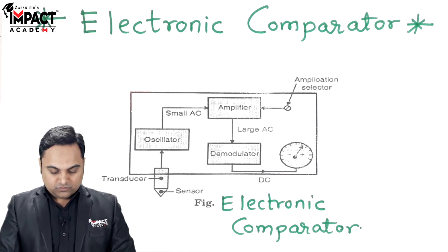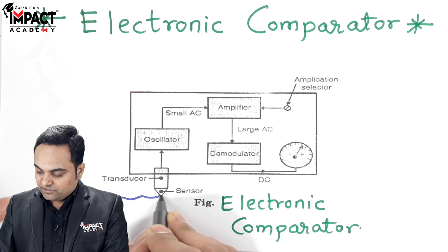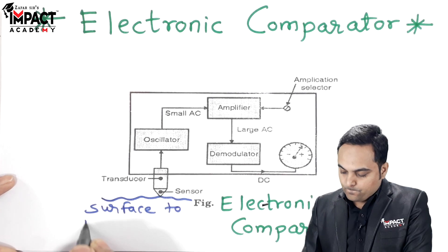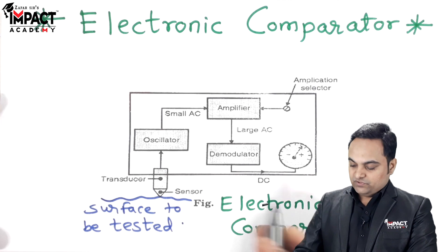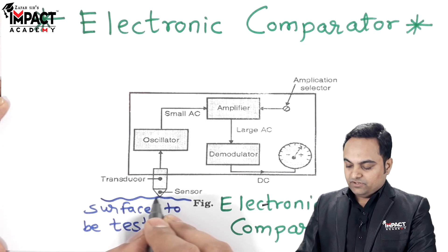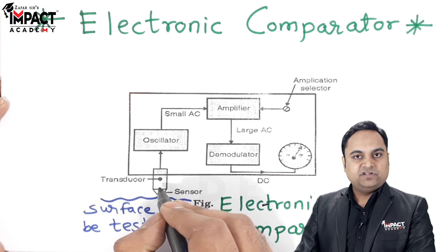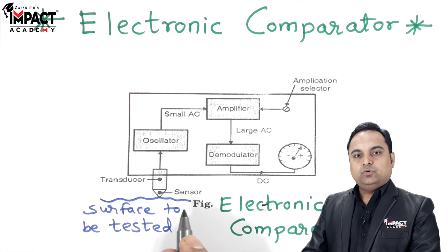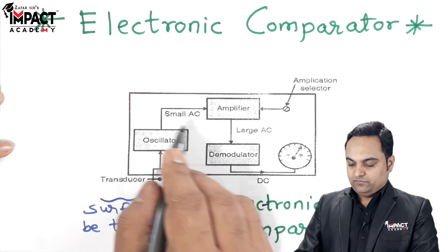Here, what are the parts we have? There is a sensor which is in contact with the surface — for example, here this is the surface to be tested which is in contact with the sensor. The sensor would be sensing the surface, and with that we have a transducer. The transducer would be converting this variation into electrical energy, and that would be fed to the oscillator, which is one of the components.